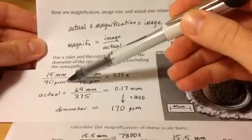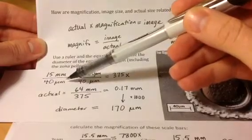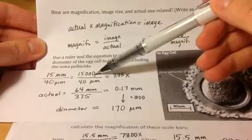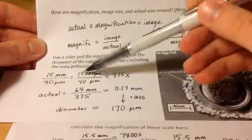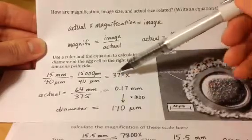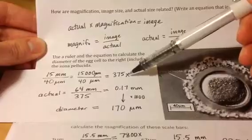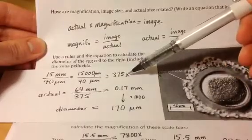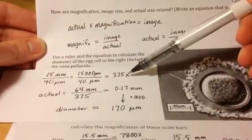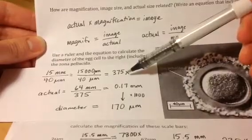Right now my units aren't the same, so I convert to microns. Now I can divide, and I get 375. No units, it's just 375 times because it's the magnification, it's just a factor. It's not a measurement.